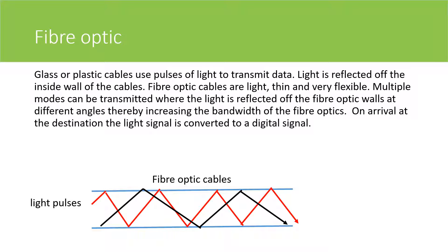Fibre optic are glass or plastic cables that use pulses of light to transmit data. Light is reflected off the inside walls of the cables. Fibre optic cables are light, thin and very flexible. Multiple modes can be transmitted where the light is reflected off the fibre walls at different angles, thereby increasing the bandwidth of fibre optics. On arrival at the destination, the light signal is converted to a digital signal.